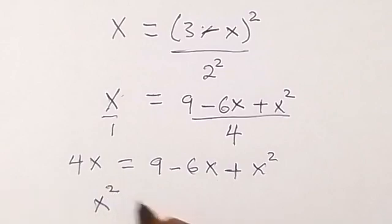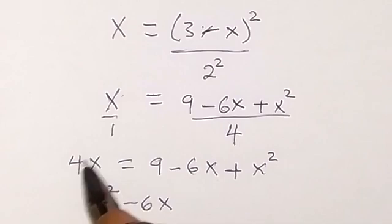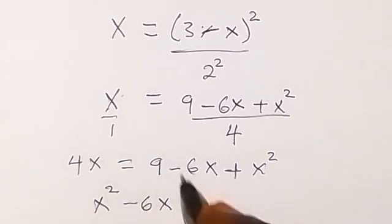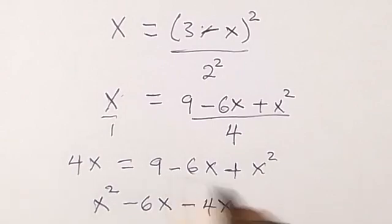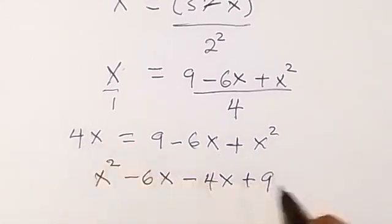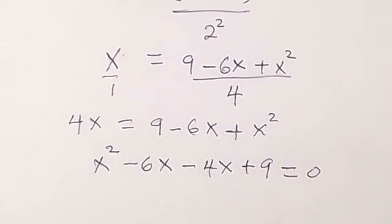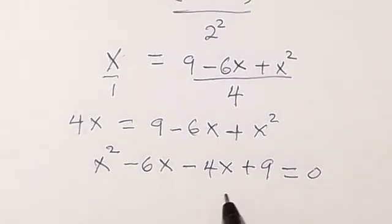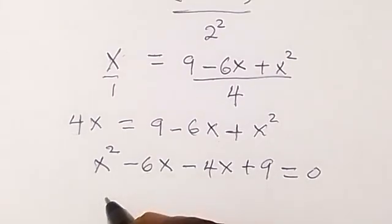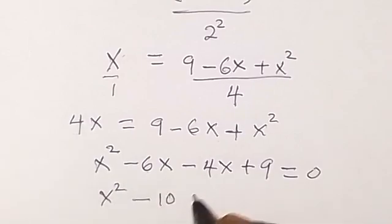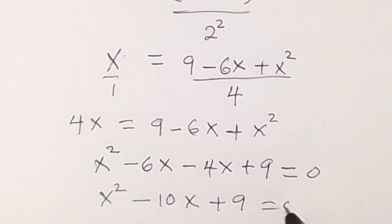So rearranging, we already have x squared, we already have minus 6x, and we take 4x to this side, so that becomes minus 4x, then we have plus 9, and nothing will be on the other side, so equals to 0. This becomes x squared minus 10x plus 9 equals to 0.